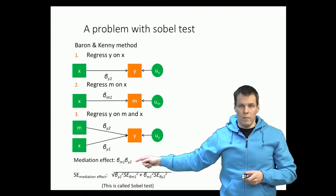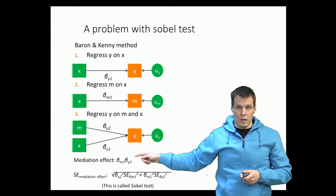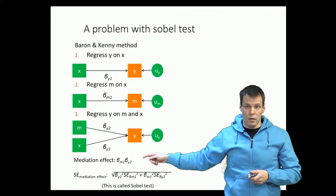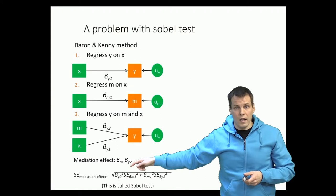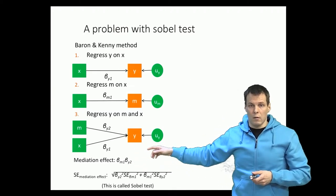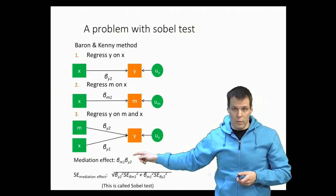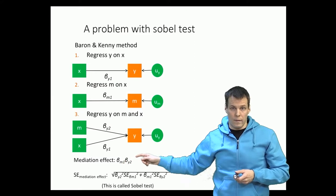So beta m1 and beta y2, their product is not normally distributed. And calculating the standard error requires that we make some kind of assumptions about the distribution of these two effects.